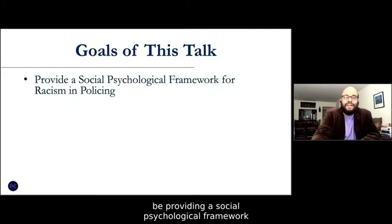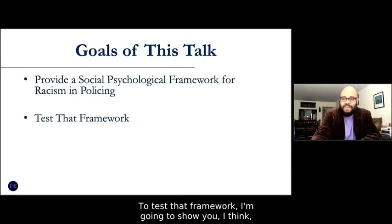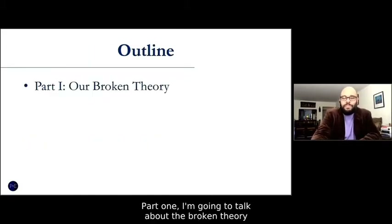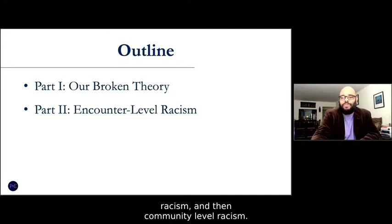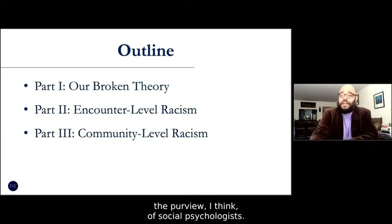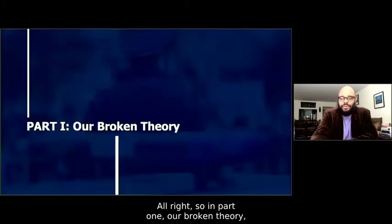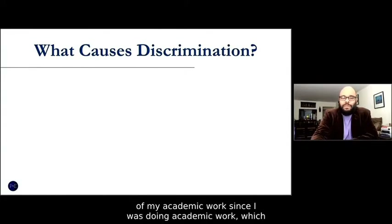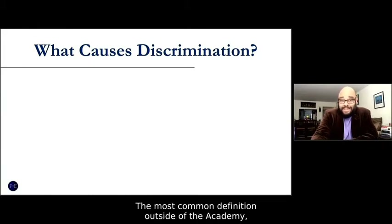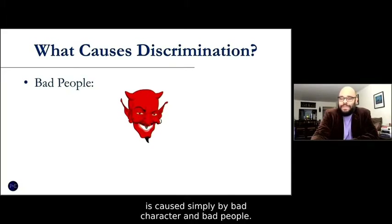The goal of my talk today is providing a social psychological framework for racism and policing and testing that framework. I'll show you two studies and demonstrate the framework's utility. In part one, I'll talk about the broken theory. The most common definition — outside and sadly too often inside the academy — is that discrimination is caused simply by bad character and bad people. The only problem with this definition is that it's wrong; it doesn't fit the data. These are data from what's commonly known as the Princeton trilogy showing undergraduate endorsements of negative stereotypes about Black folks. From 1933 to 2000, things get better. And then in 2008 we elected a Black president — everything seemed fixed. But those are attitudes.